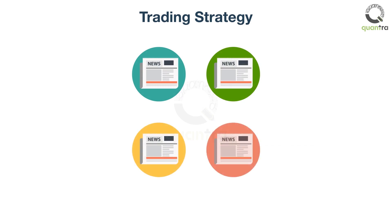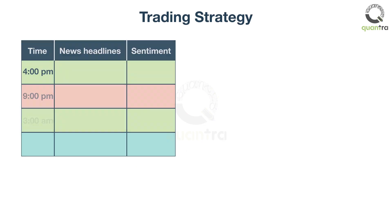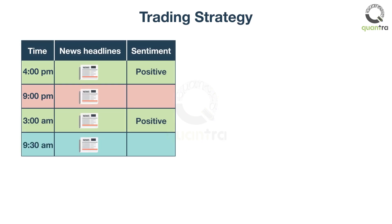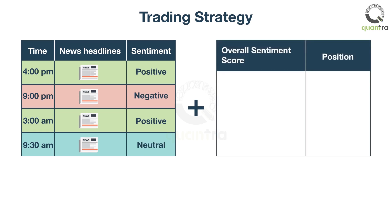For each company, we aggregate all the news from 4 p.m. to 9:30 a.m. In the data, each news item has a sentiment score consisting of a split between positive, negative, and neutral sentiment. Those scores from each news item are summed. Buy the stock if the sum of daily scores is positive, go short if negative, and do nothing if zero.